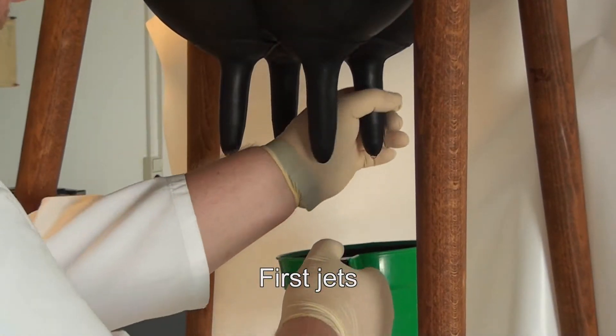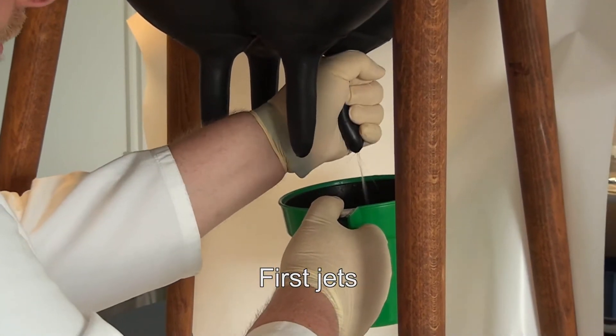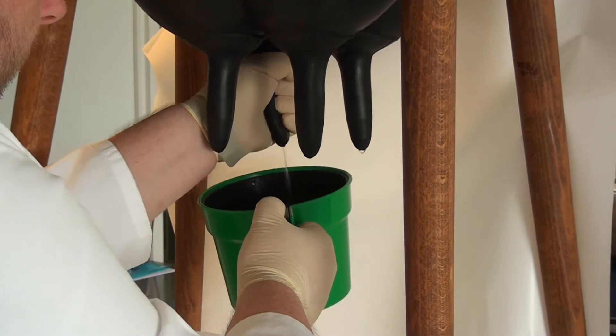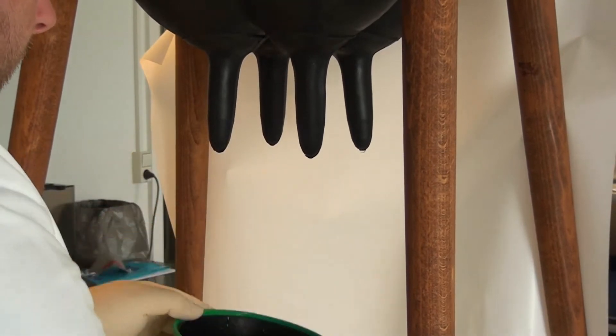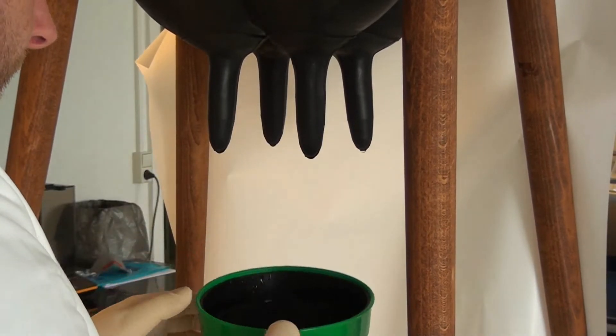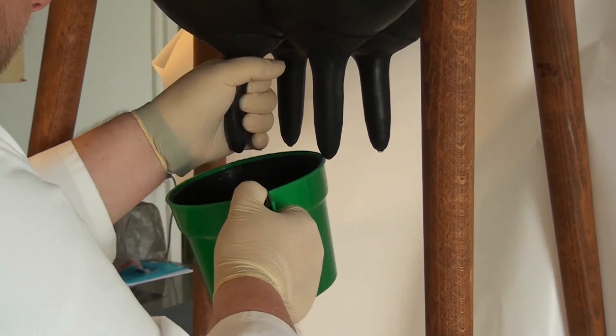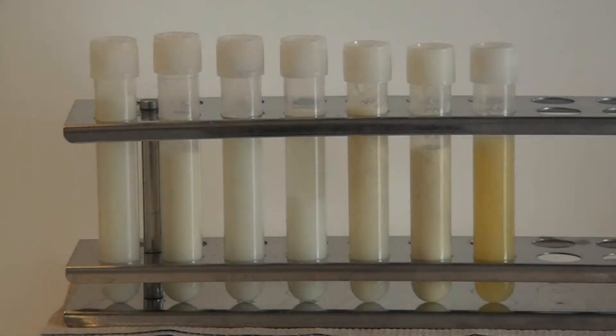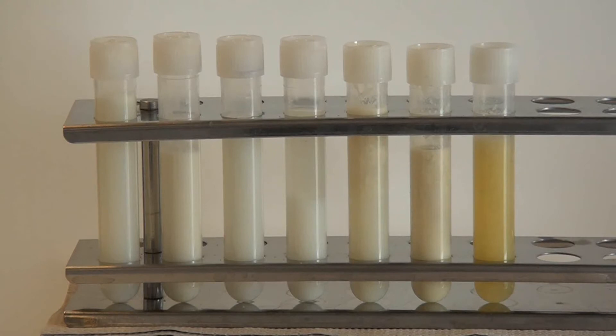The first jets are milked into the strip cup and evaluated visually. Changes in the consistency of the secretion are indicative of clinical mastitis. For the milker, this step decides whether the cow is milked into the tank or if her milk is dumped afterwards. Tubes from left to right contain secretions in decreasing quality, from clinically inconspicuous to strongly impaired. When these secretions are moved, clots become more visible in some tubes.